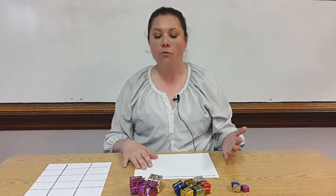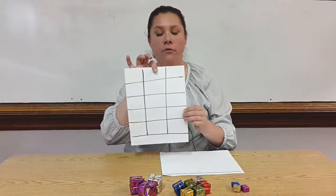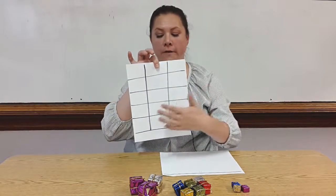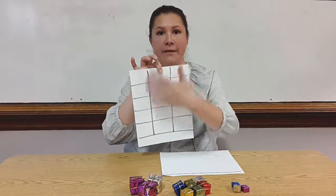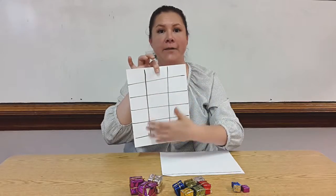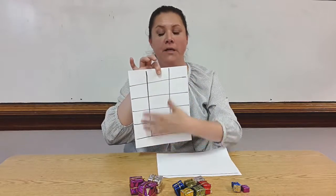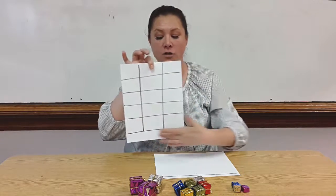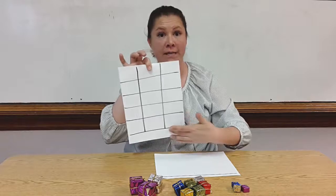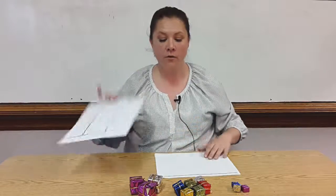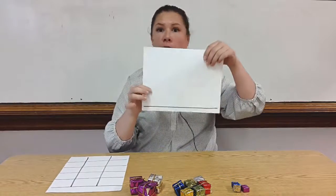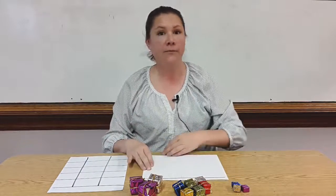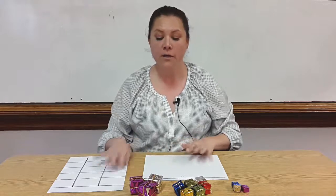Two things you can use: you can have a grid to help them when they're placing their objects so that they place them equally and start at a certain place altogether. Or you can just have a line on a piece of paper like this, and they can build up from the bottom.